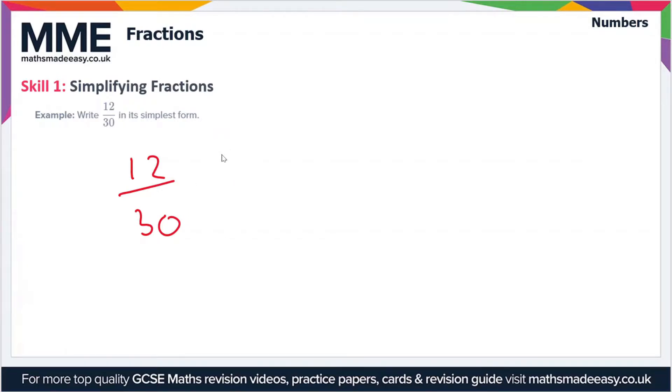That's the highest common factor of 12 and 30. So the highest common factor of 12 and 30 is 6, because 12 is 6 times 2 and 30 is 6 times 5.